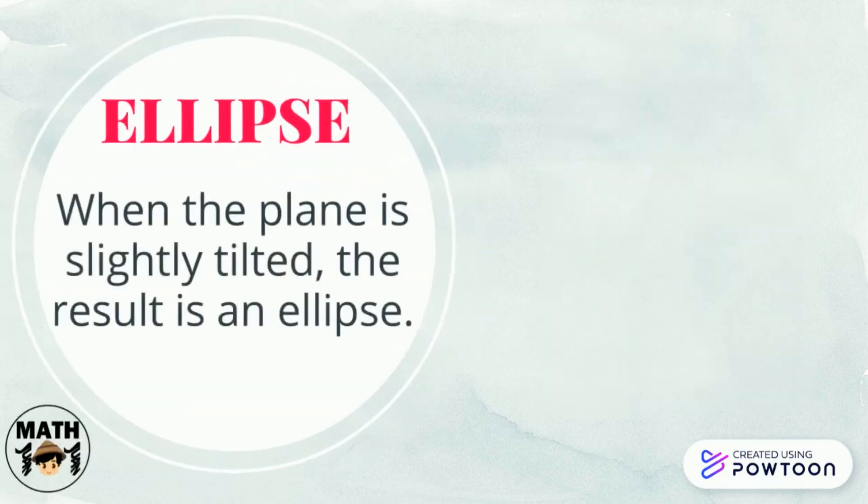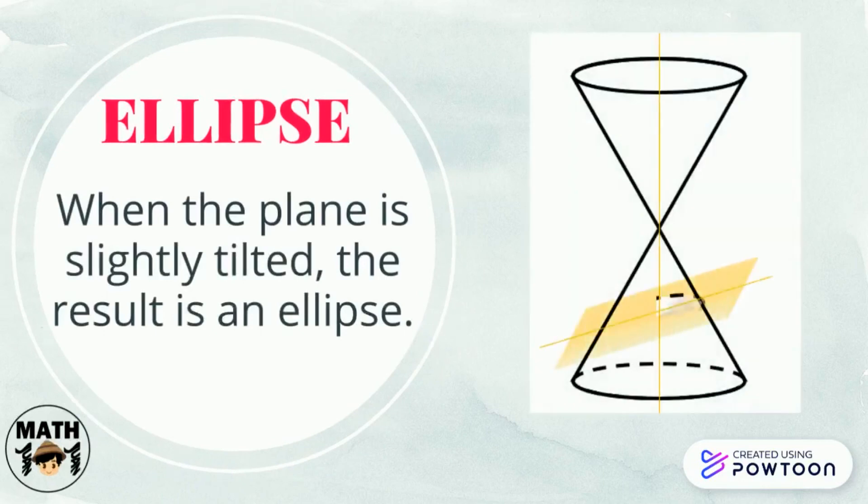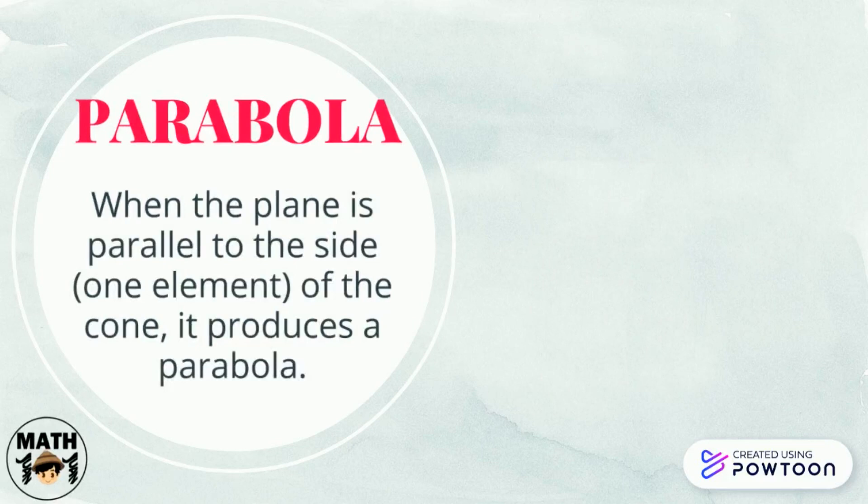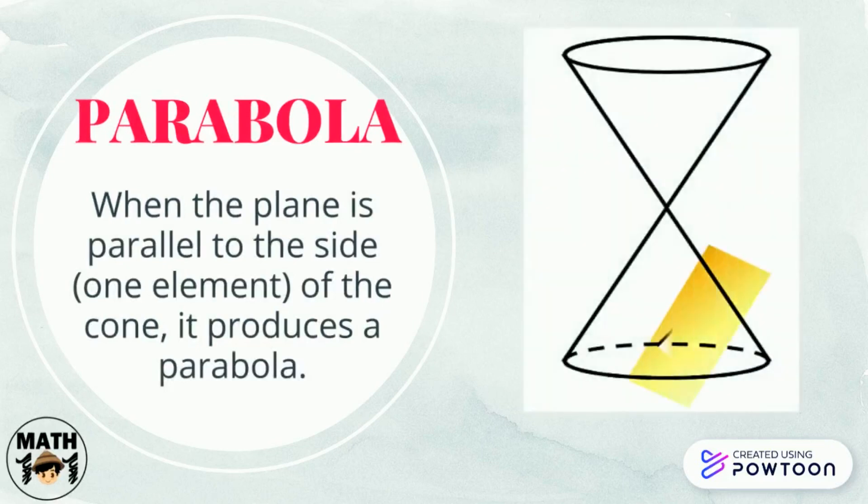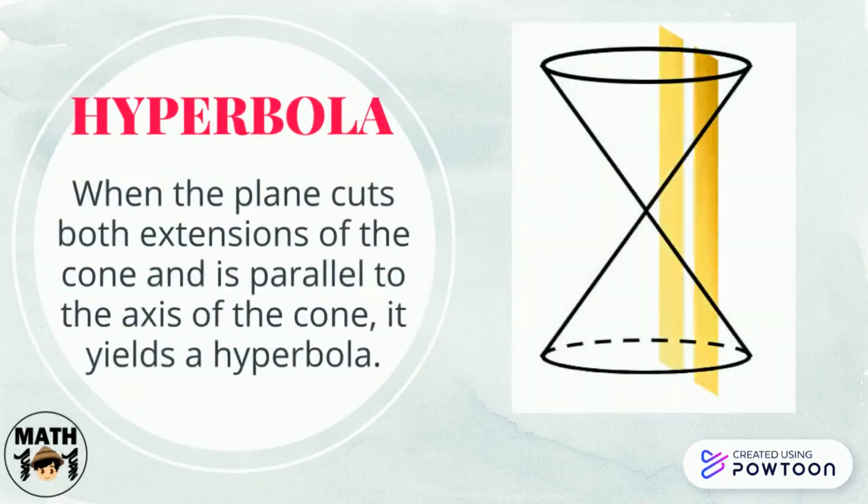If the plane is slightly tilted, the result will be an ellipse. If the plane is parallel to the side or one element of the cone, we can form a parabola. If the plane is parallel to the axis of the cone and it cuts both extensions, we can form a hyperbola.